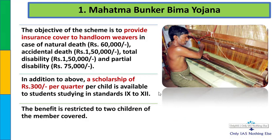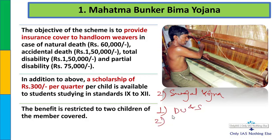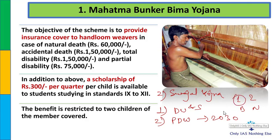दूसरा question आज Swajal Yojana से related है. आपको बताना है कौन सा statement सही है. पहला statement: this scheme is under the Ministry of Drinking Water and Sanitation. दूसरा statement: under this scheme, the main objective is to provide pipe drinking water facility to every household by the year 2030. बताना है - one only, two only, both, या none.